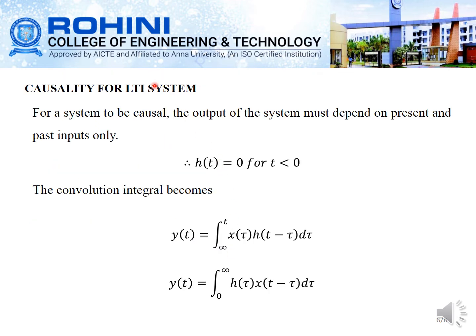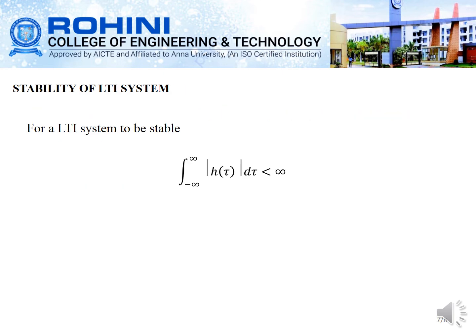For causality of an LTI system, the output must depend on present and past inputs only, which means h(t) equals 0 for t less than 0. Therefore, the convolution integral becomes y(t) equal to the integral from minus infinity to t of x(tau) times h(t minus tau) d tau, or equivalently y(t) equal to the integral from 0 to infinity of h(tau) times x(t minus tau) d tau.